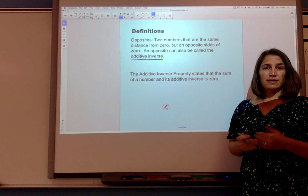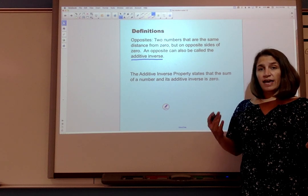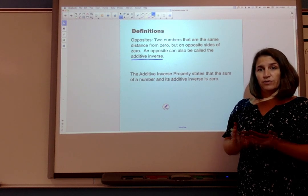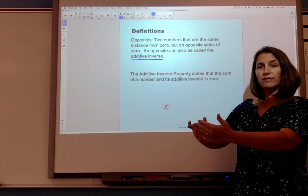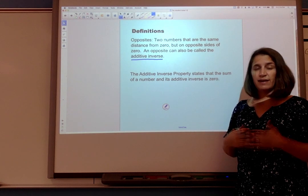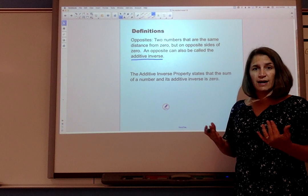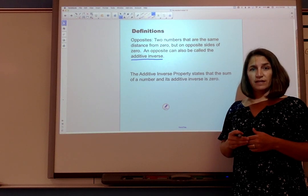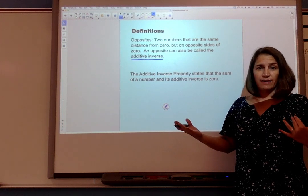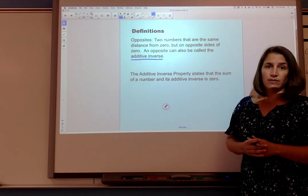So the sum of 5 and -5 would be 0. If I take 5 steps forward and then 5 steps back I'm exactly where I started. So the reason that opposites are also called the additive inverse is because if you add them you get back to 0.